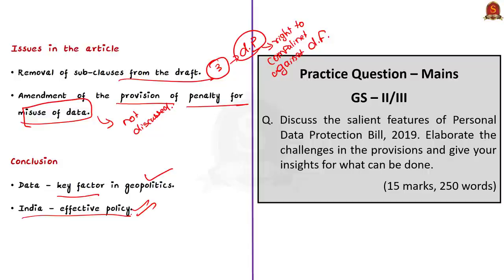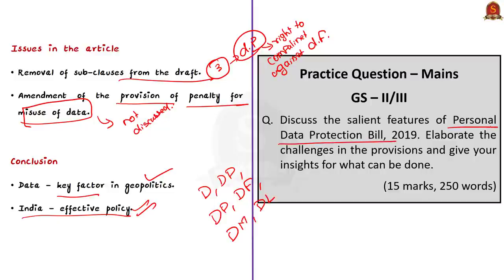In this segment, we discussed the basic definitions regarding terms like data, data protection, data principal, data fiduciary, data mirroring and data localization. We also saw some key provisions of the Data Protection Bill 2019. With this, let us conclude this discussion and take up the next article.